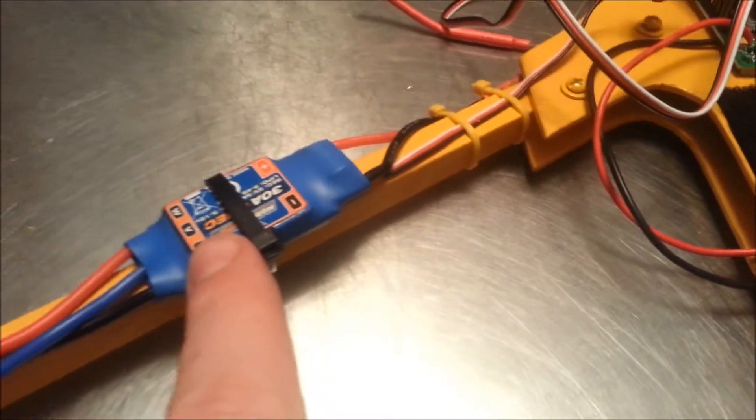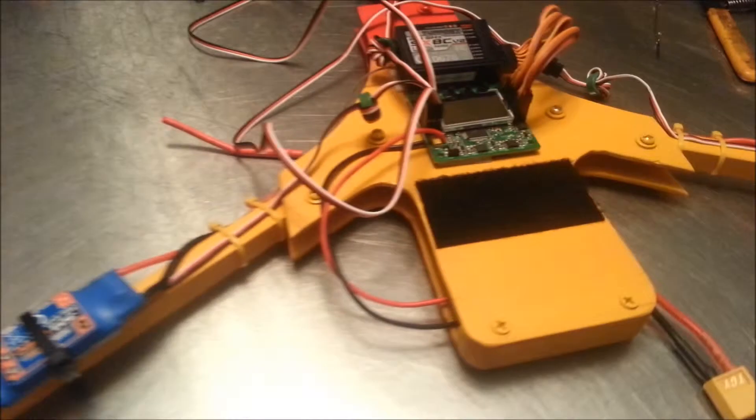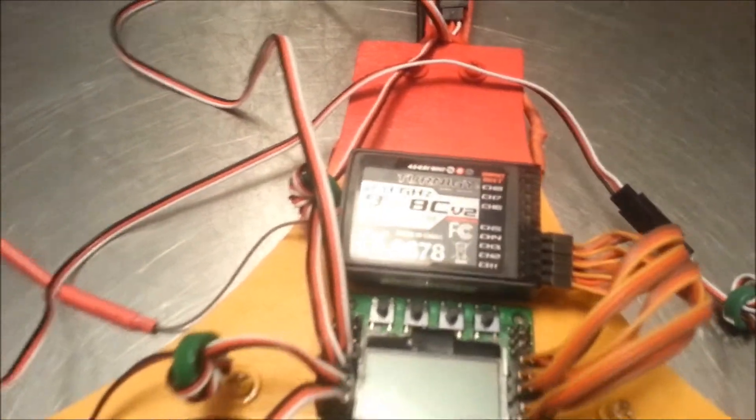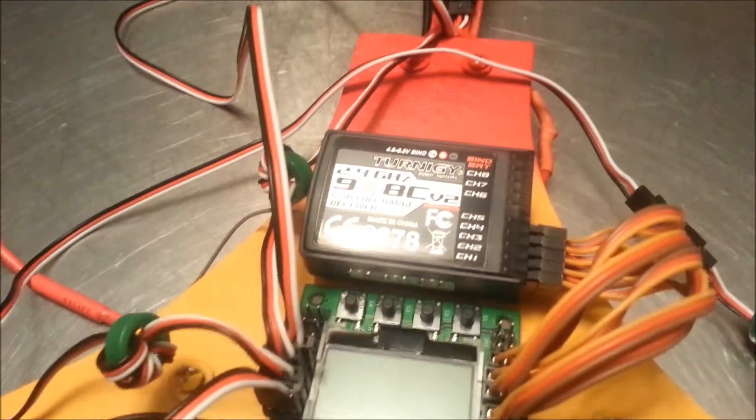I got the Hobby King 30 amp BEC speed controllers like he recommended. I got the KK2 Hobby Board and I got a Turnagy 9X receiver. It came with the Turnagy 9X transmitter.